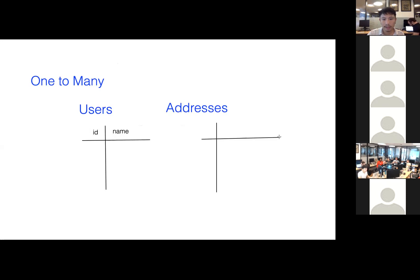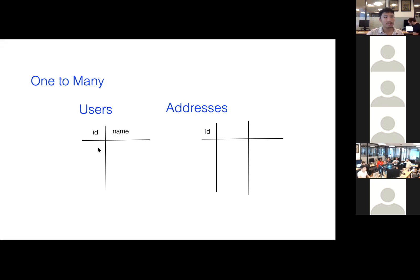Over here we have an ID, and IDs are always unique. When you make an ID column and you say primary key, that implies no two values are going to be the same in this column. So if I have a one, a two, and a three — let's say I have the same on this side.